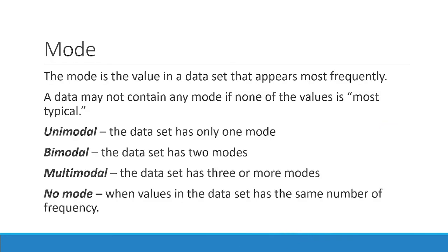Moving on — our next measure of central tendency is the mode. Mode is the value in the dataset that appears most frequently. A dataset may have no mode if none of the values appears most frequently. A mode can be unimodal — the dataset has only one mode; bimodal — the dataset has two modes; multimodal — three or more modes; or a dataset may have no mode when all values have the same frequency.